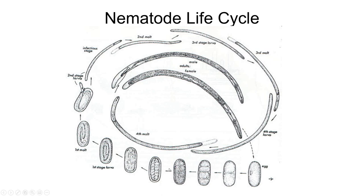A common question is: how many cycles can a nematode do in a year? In our environment on the prairies, where we have a growing season of about three to four months, we're looking at about two generations or so — two life cycles — so we can easily get a doubling or quadrupling of the population.